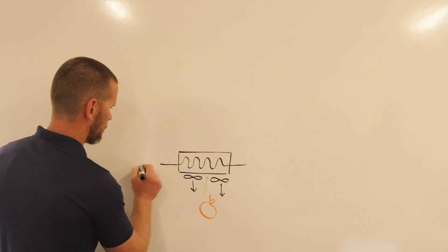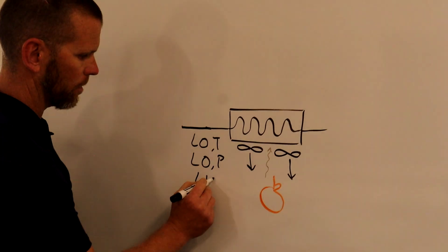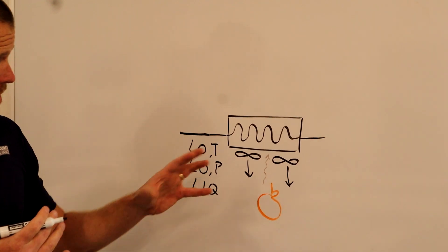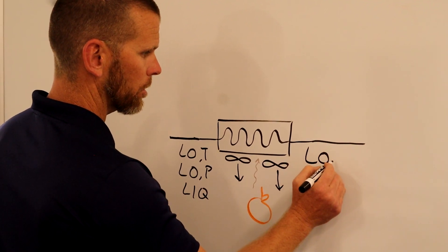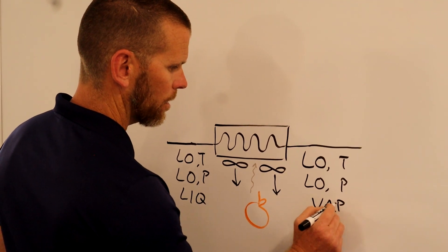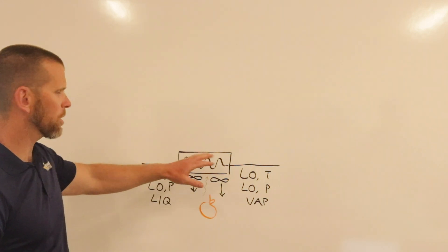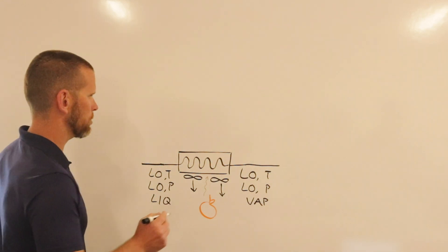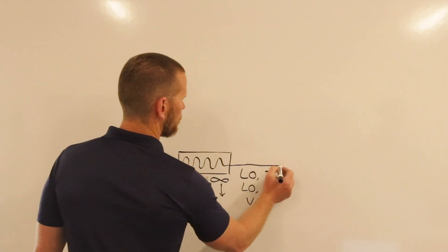The ammonia enters the evaporator as a low temperature, low pressure liquid. Because of heat added to the evaporator from the orange, it exits the evaporator still at low temperature and low pressure, but now as vapor. When a substance changes from liquid to vapor, there is no change in temperature. Technically there is a pressure drop through the evaporator, but it's minimal and designed to be minimized, so we can say it occurs at constant pressure. From the evaporator, what do we do with this low pressure vapor? We need to recompress it.